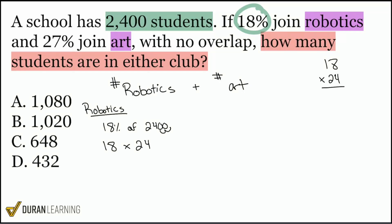Let me do 18 times 24 right over here. 8 times 4 is 32, carry the 3. 1 times 4 is 4, carry the 3 is 7. Add a 0 for the next row. 8 times 2 is 16, carry the 1. 1 times 2 is 2, carry the 1 is 3. Add it back: 2, 7 plus 6 is 13, and that's 4. So we have 432 for robotics.